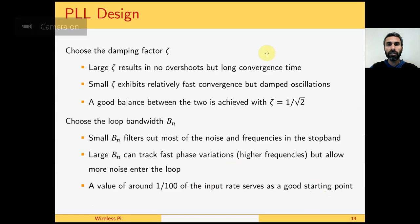PLL design starts with choosing the damping factor zeta and the loop noise bandwidth BN. We should keep in mind that a large zeta results in no overshoot but the convergence time is long because it slowly settles into the equilibrium.